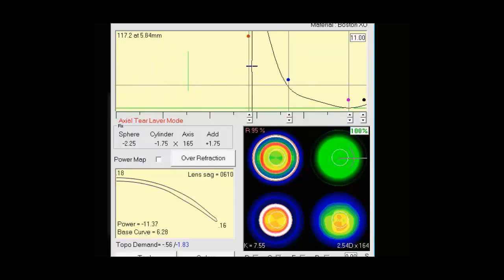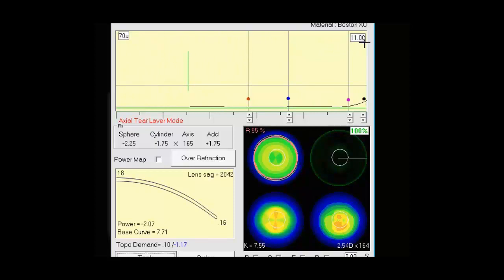All the way across in the upper right, we have our lens diameter. It's currently set to 11.0. If you want to change lens diameter, this is a dropdown. You see we can design lenses as large as 18 millimeters and as small as 8.6 millimeters.